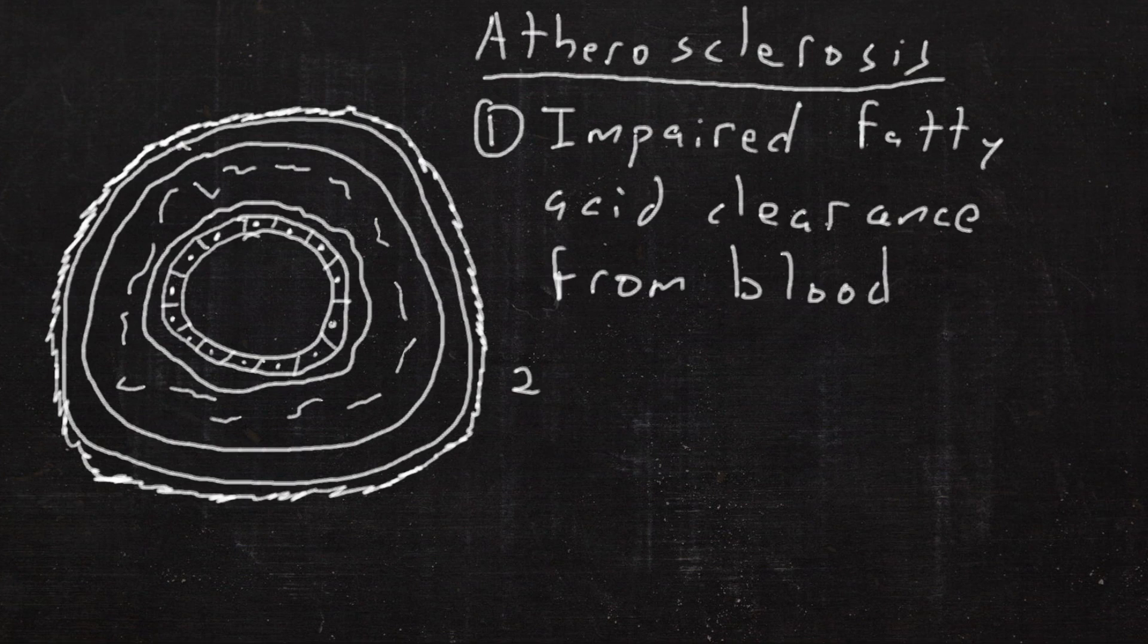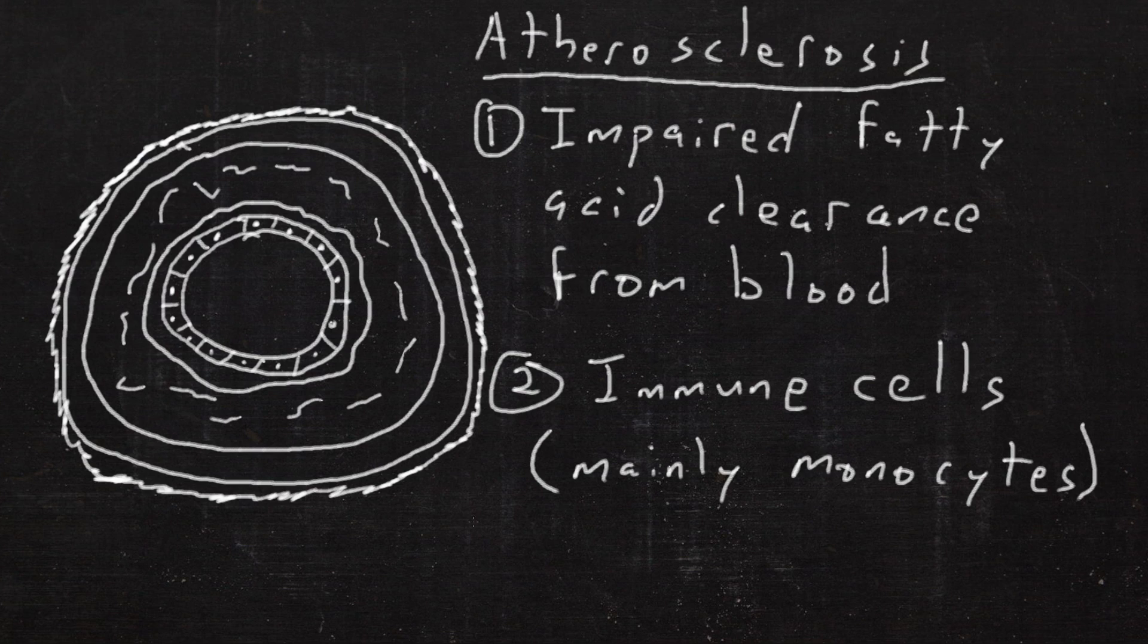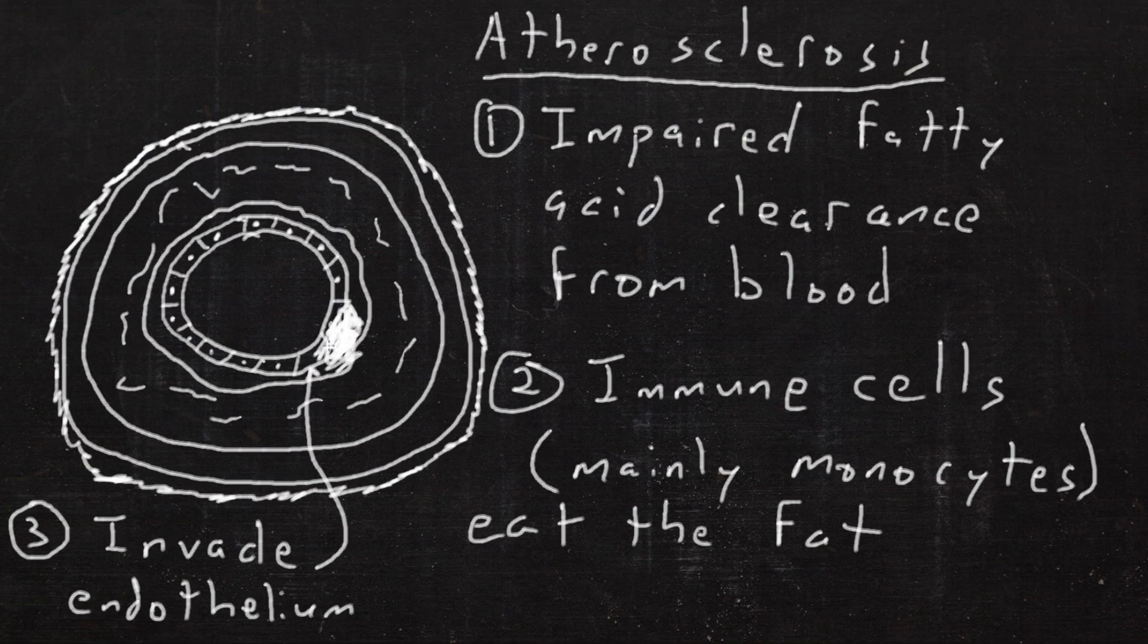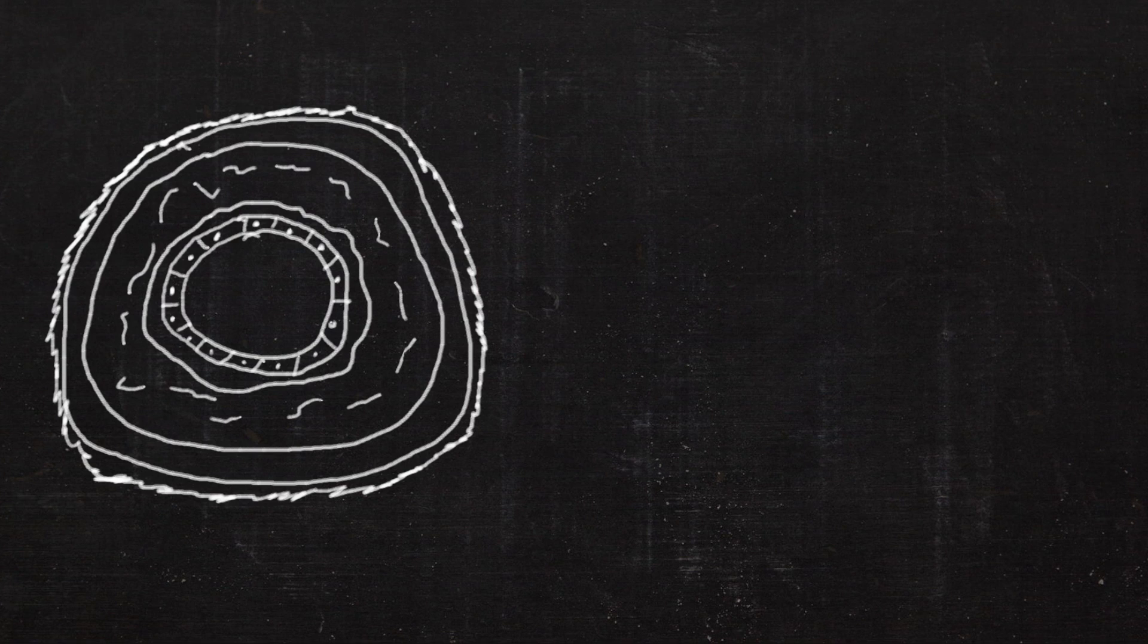Atherosclerosis is from impaired fatty acid clearance from the blood. Immune cells, mainly monocytes, pick this up and then invade the endothelium, causing narrowing of the lumen.